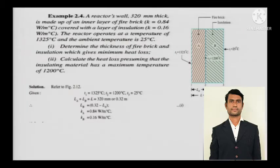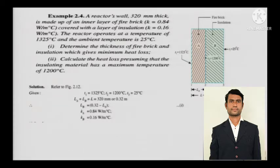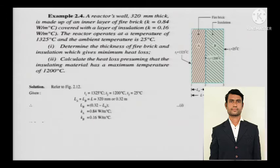A reactor's wall 320 mm thick is made up of an inner layer of fire brick with K equals 0.84 watts per meter degree Celsius, covered with a layer of insulation with K equals 0.16 watts per meter degree Celsius. The reactor operates at 1325 degree Celsius and the ambient temperature is 25 degree Celsius. Determine the thickness of the fire brick and insulation which gives minimum heat loss, and calculate the heat loss given that the insulating material has a maximum temperature of 1200 degree Celsius.